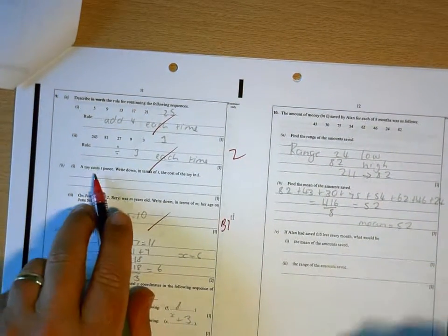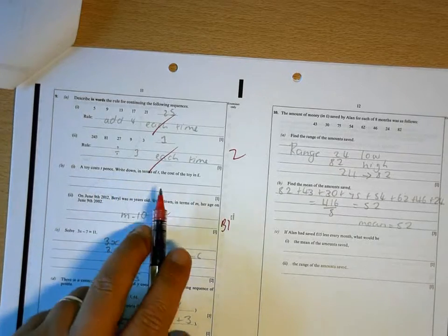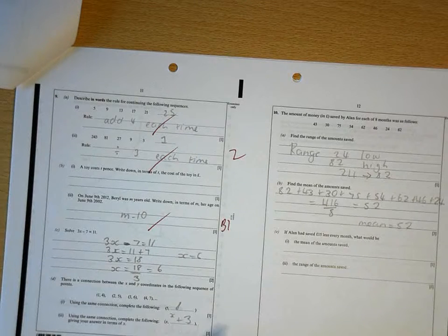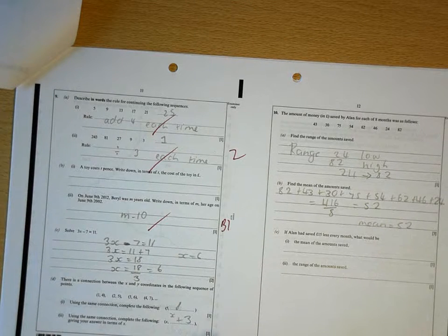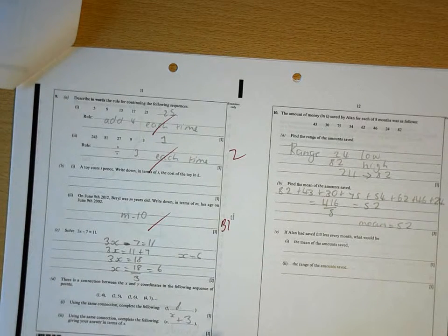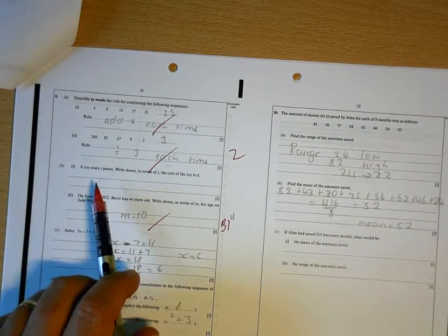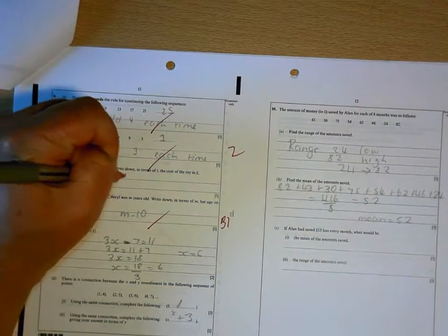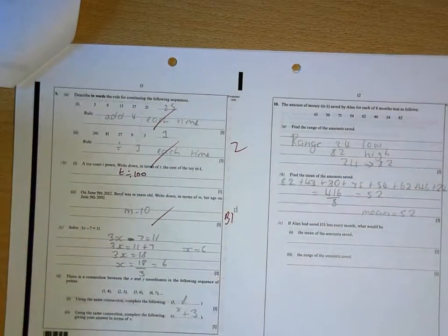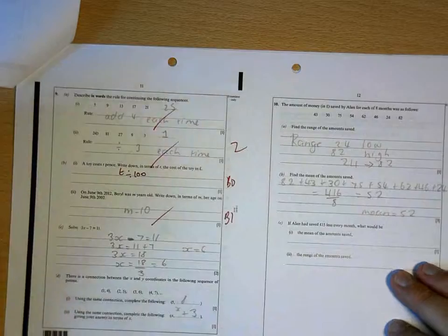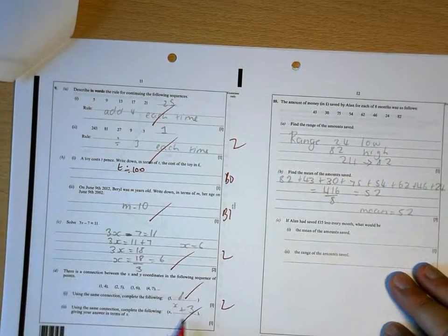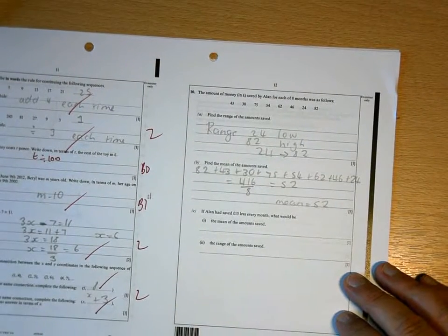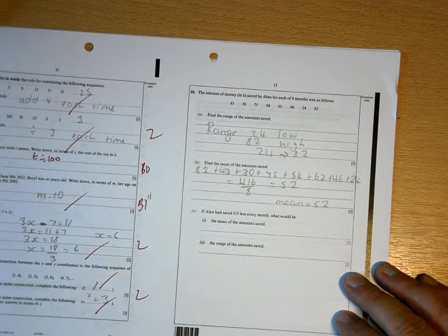A toy costs T pence. Write down in terms of T the cost of the toy in pounds. So if it cost 400 pence, we wouldn't say 400 pence, we'd say 4 pounds. So what you do to the 400 to get 4 is dividing by 100. So what they're looking for there is T over 100. Well done. First one to get that x plus 3 right.